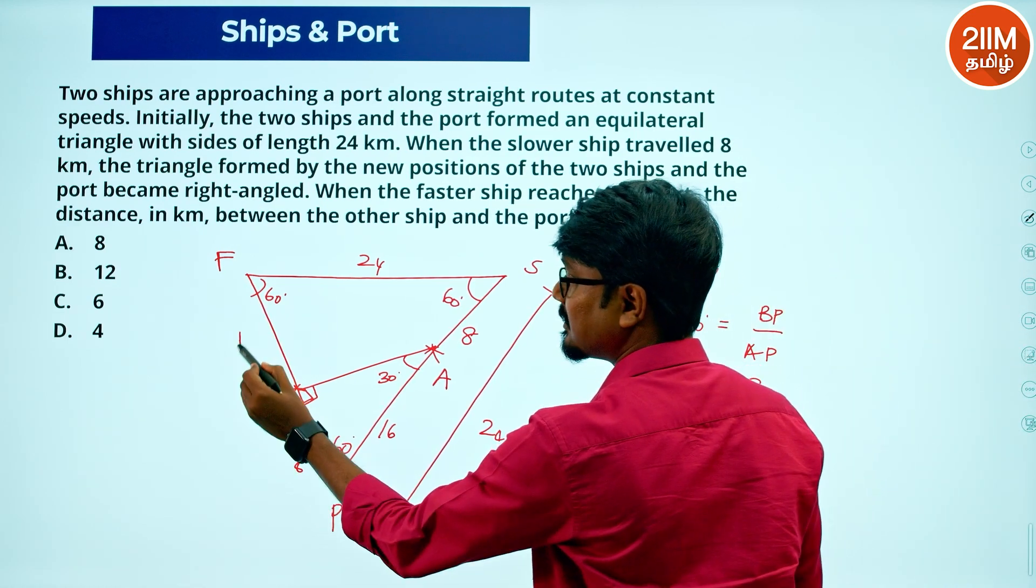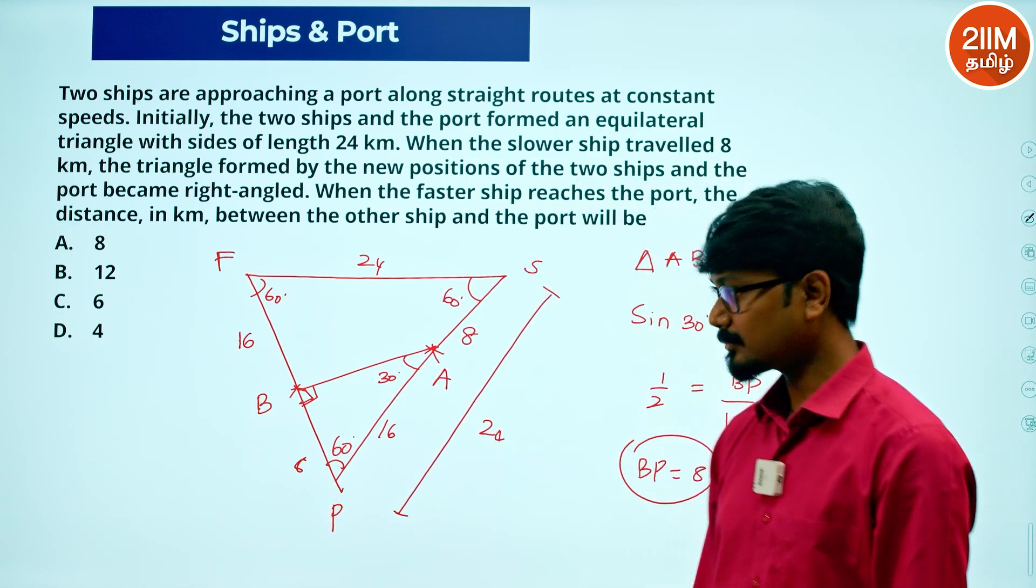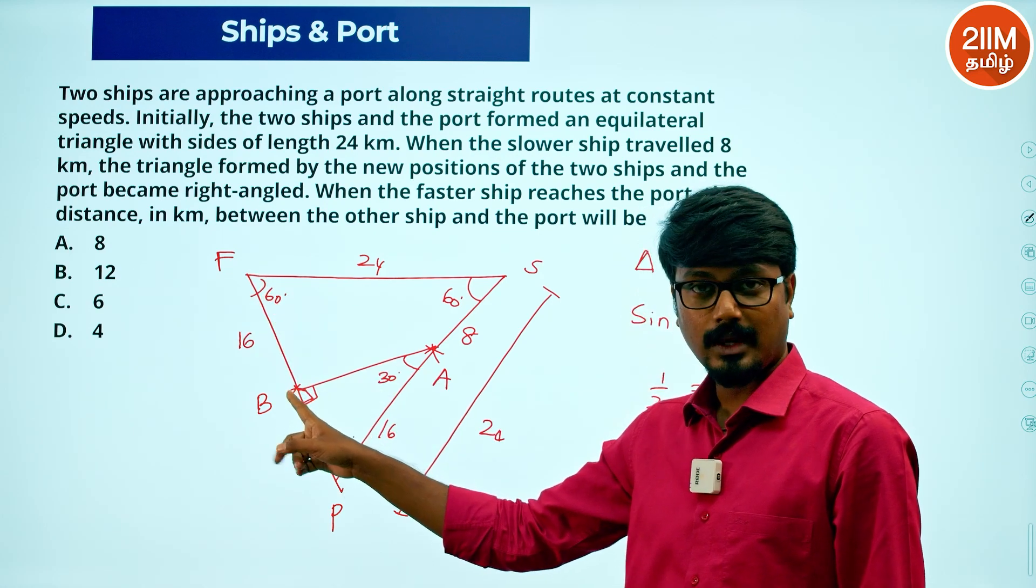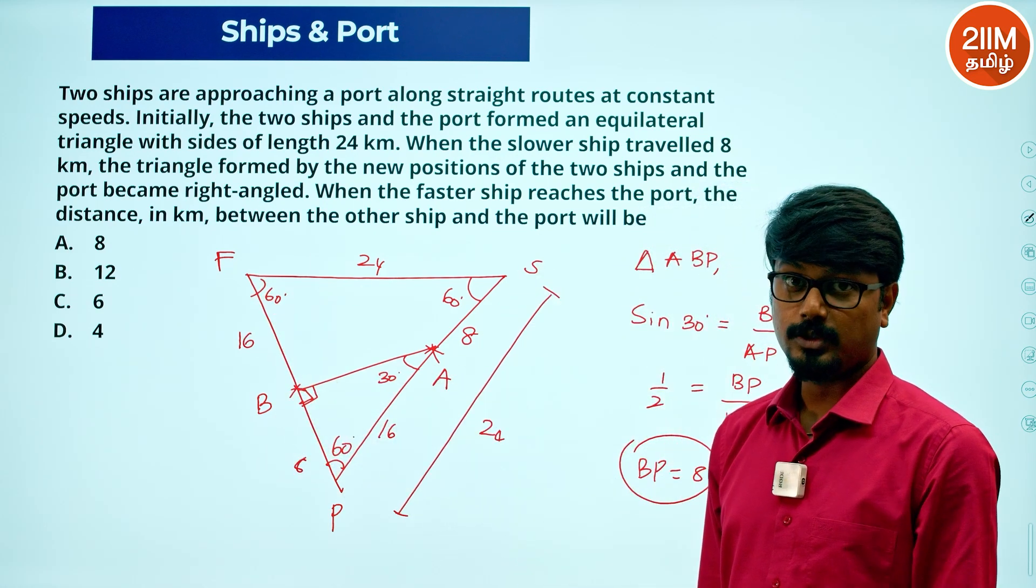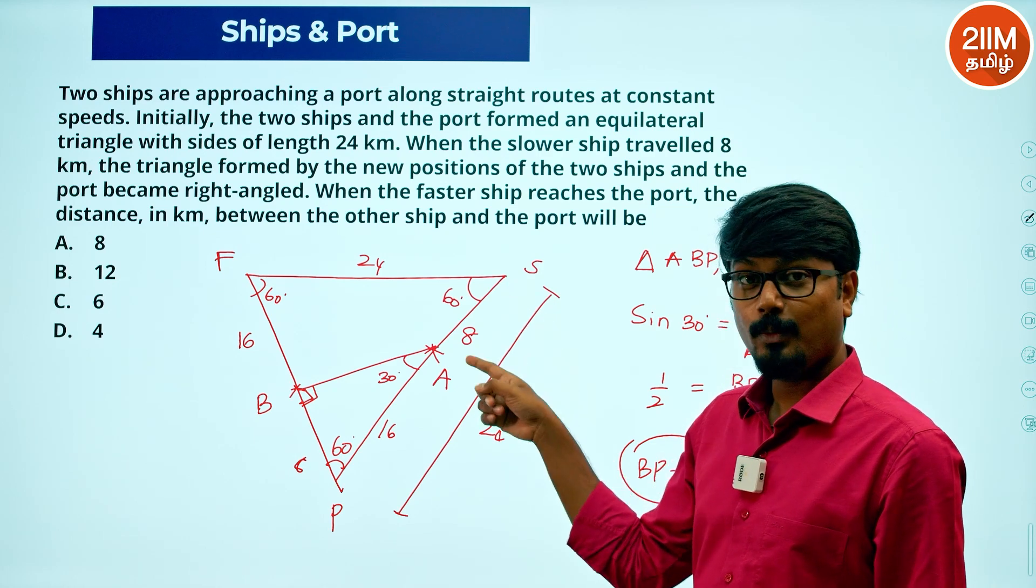This is 8. It is 16 kilometers. Correct. 16 kilometers where slower ship is 8 kilometers, which means 8 kilometers to 16 kilometers.